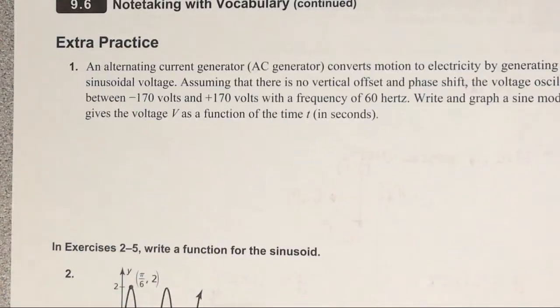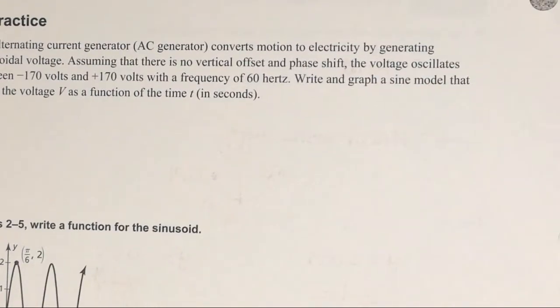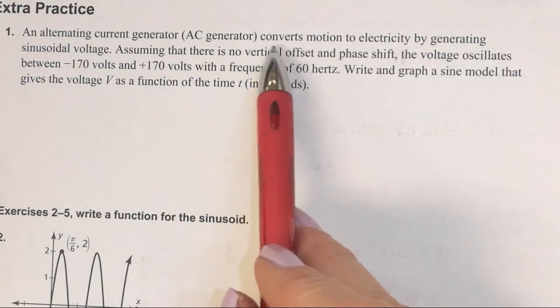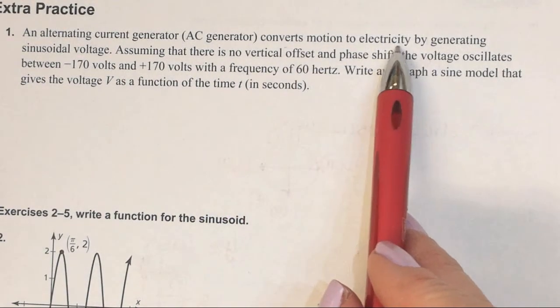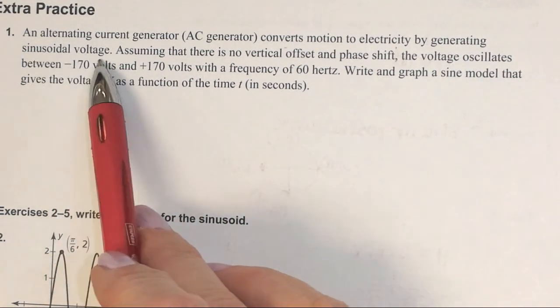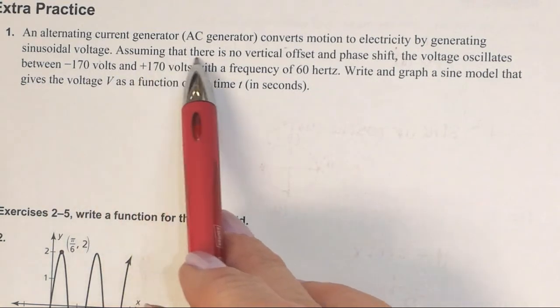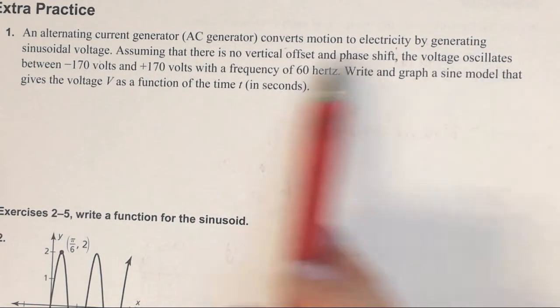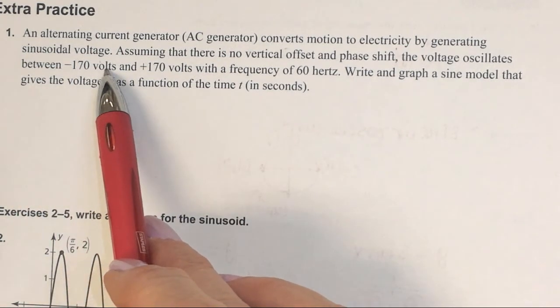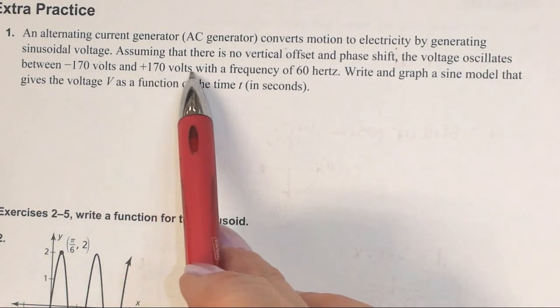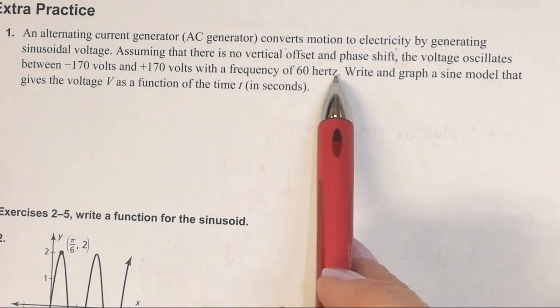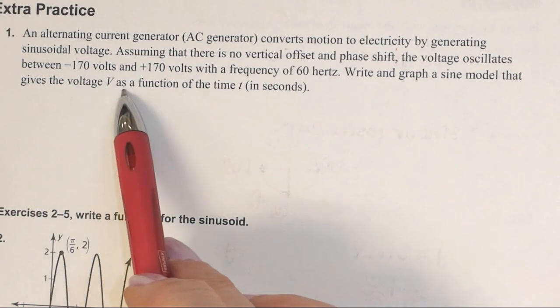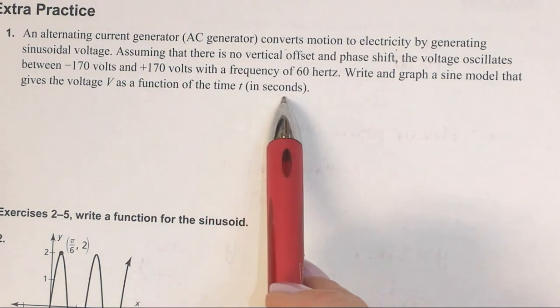Let's flip over to the back now. An alternating current generator (AC generator) converts motion to electricity by generating sinusoidal voltage. Assuming there is no vertical offset and phase shift, the voltage oscillates between -170 volts and +170 volts with a frequency of 60 hertz.